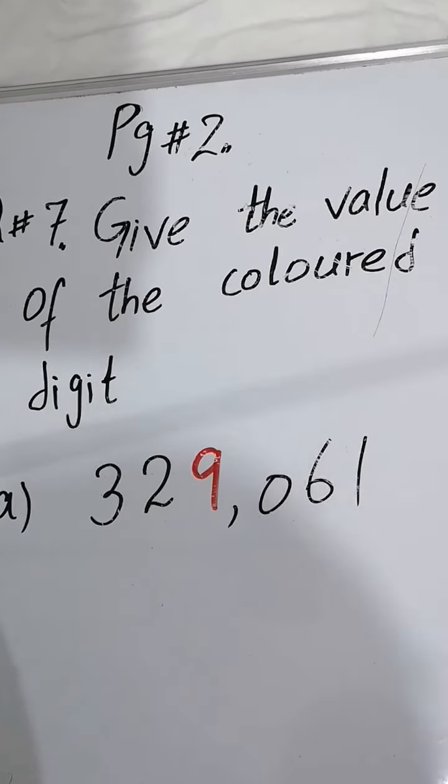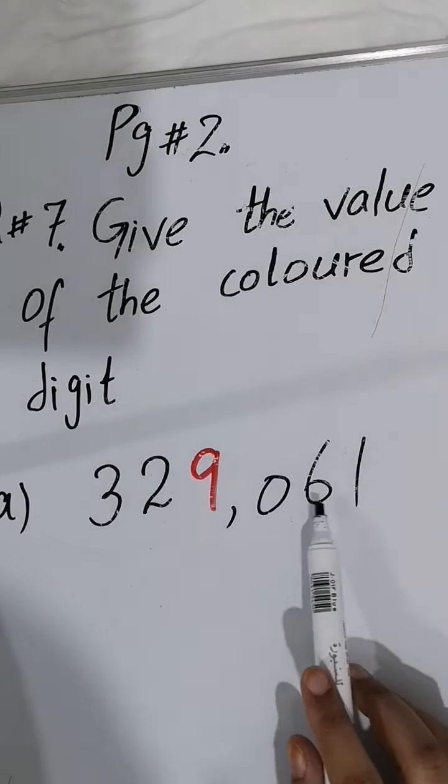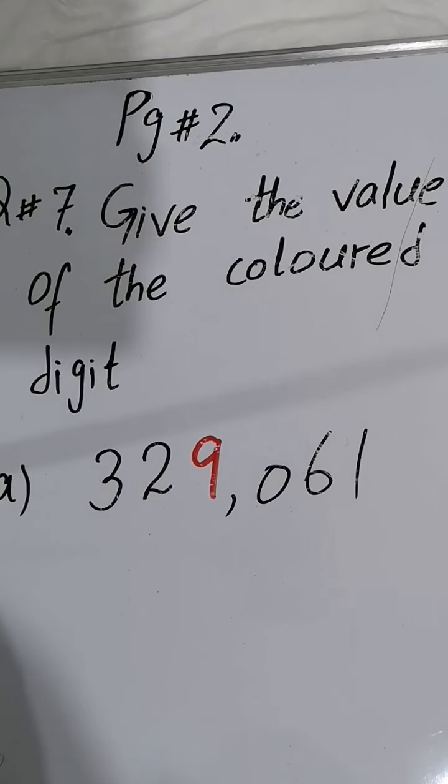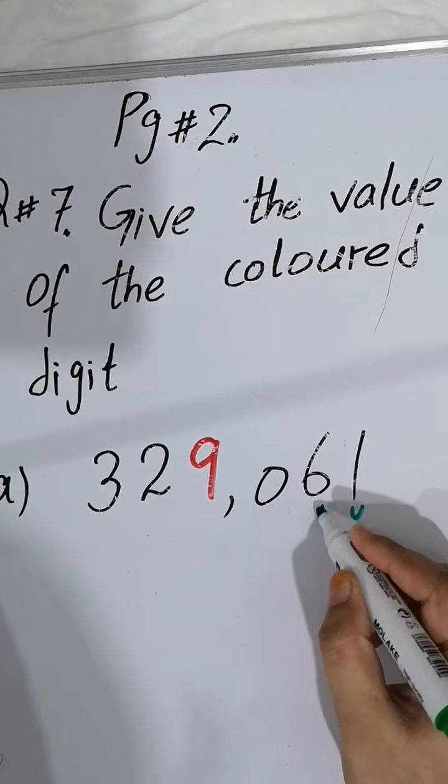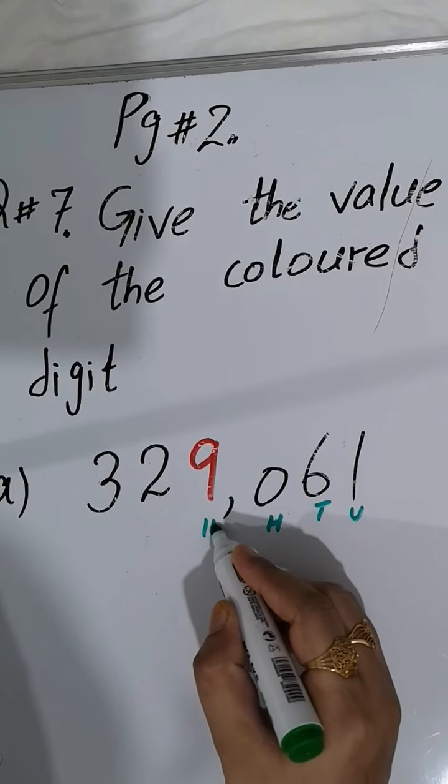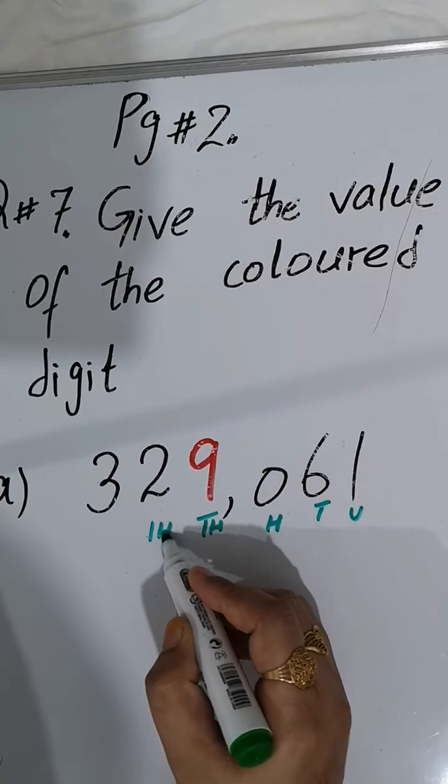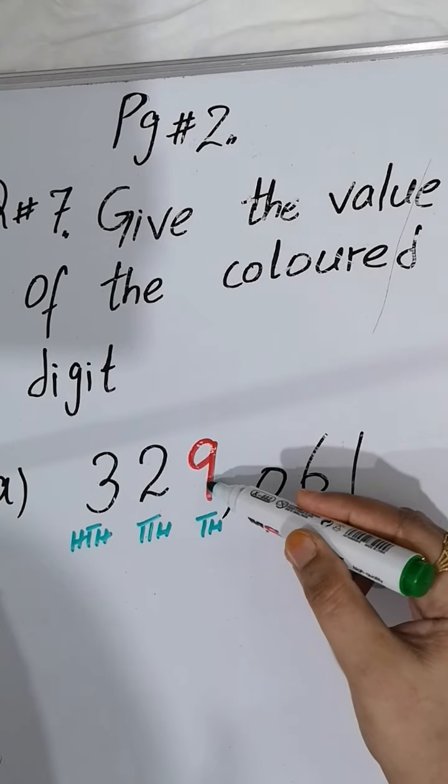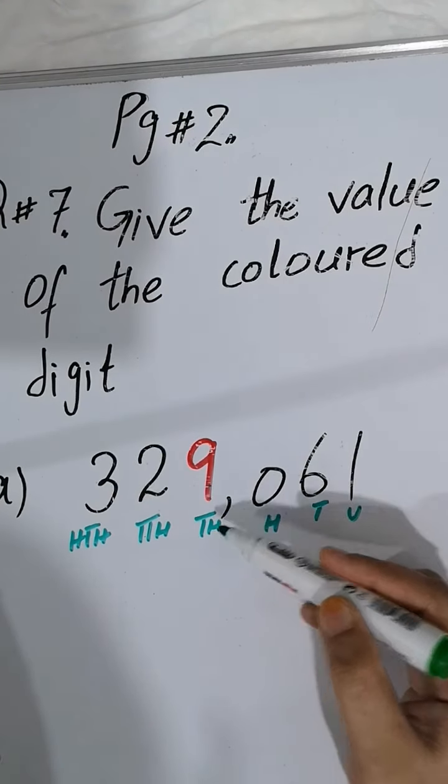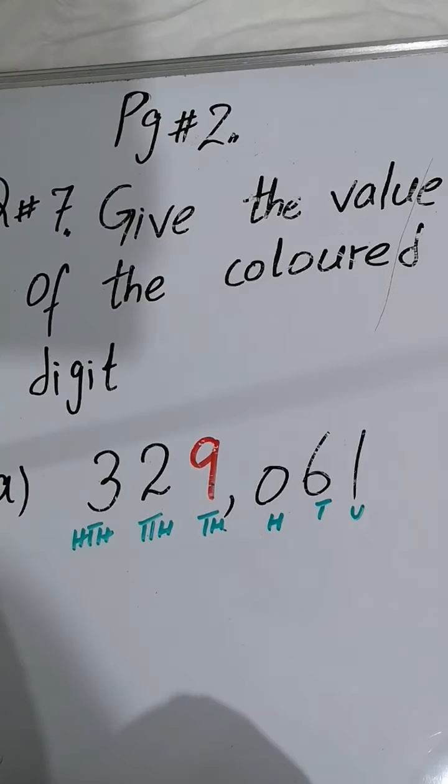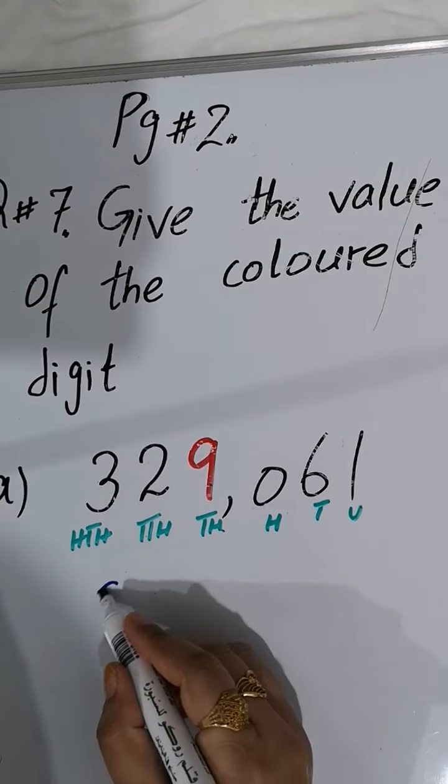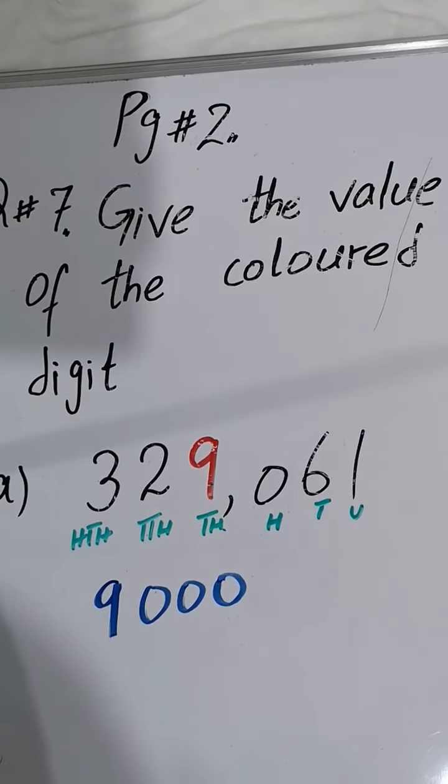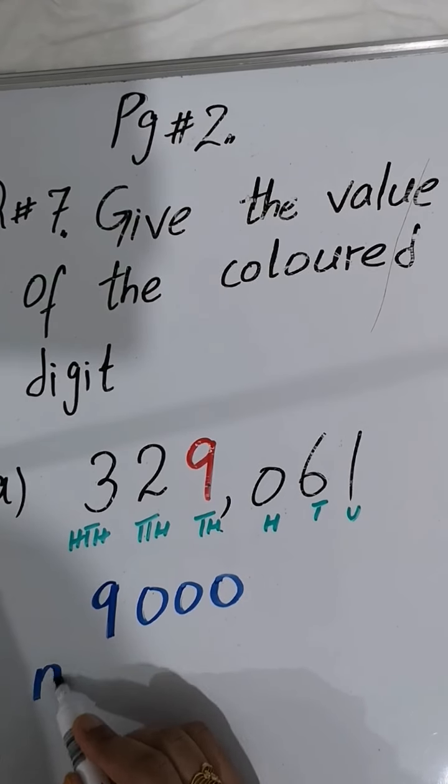The very first part is 329,061. As we know, when we are reading a number we count the units from the right side: unit, ten, hundred, thousand, ten thousand, hundred thousand. What is the value of this colored digit? It's 9 in the thousands place, so the value of 9 is 9000.